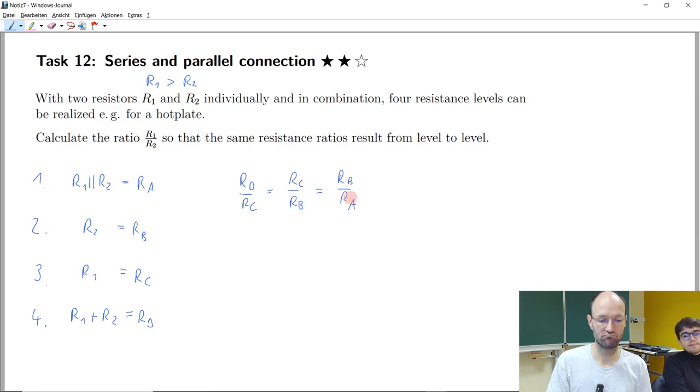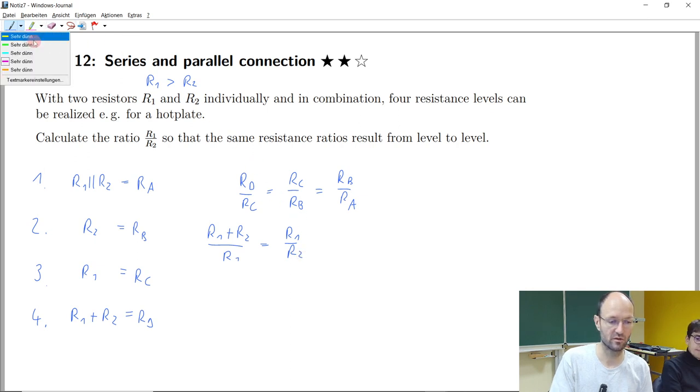And so now we can, into this equation, insert all the stuff. So RD is R1 plus R2, RC is R1. So then we have R1 divided by R2. This is R2, this is already the ratio here that we are looking at.